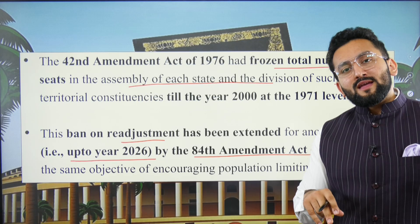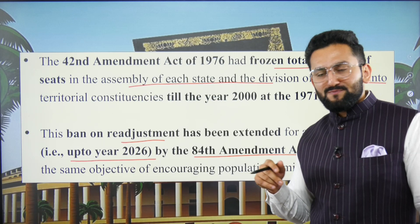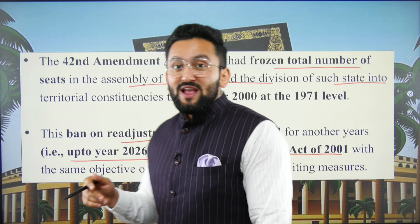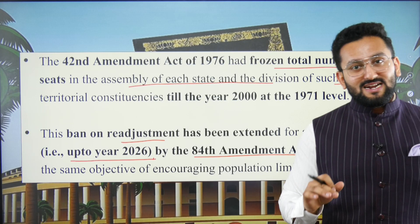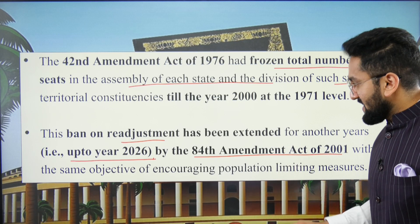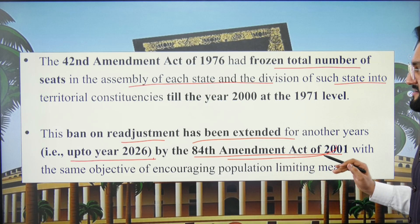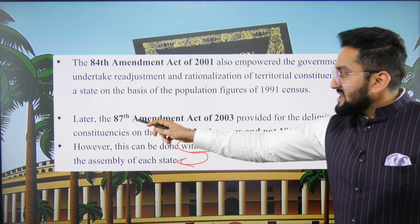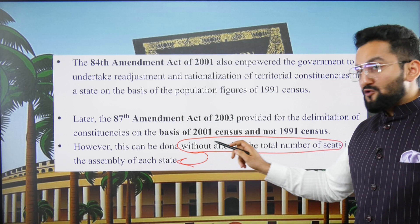To reduce such disparity, the readjustment of seats was frozen. As per the 84th Amendment, this freeze continues until 2026. The idea was that in this period the population growth rate disparity between states could be normalized, though there are opinions against this as well.